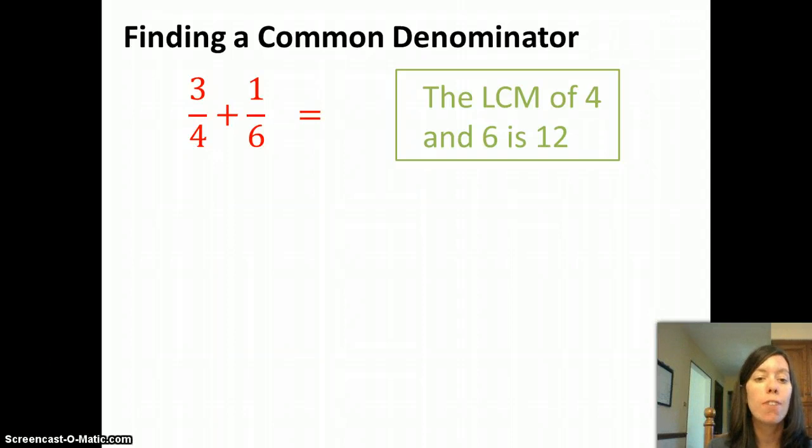So we're going to rewrite these fractions using 12 as the denominator. So now I have to ask myself, if I'm going to rewrite 3/4 using the denominator of 12, what would I have to multiply by? Well, to get from 4 to 12, I have to multiply by 3.